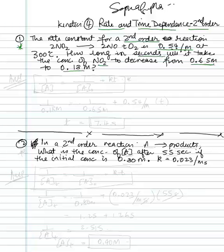So again, as I said, there are equations for this one, and so you'll find the equation. And the equation for our second-order is 1 over A is equal to 1 over A original plus KT. So that is your second-order time dependence equation.